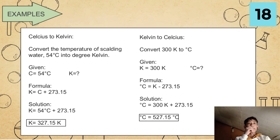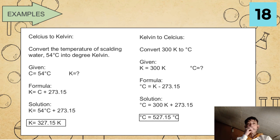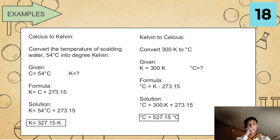We also have an example in Kelvin to Celsius: convert 300 K into degrees Celsius. Given: K equals 300 Kelvin, and we are finding Celsius. Using the formula degrees Celsius equals K minus 273.15, we substitute: degrees Celsius equals 300 K minus 273.15. Once we solve that, degrees Celsius equals 26.85 degrees Celsius, and that is our final answer.